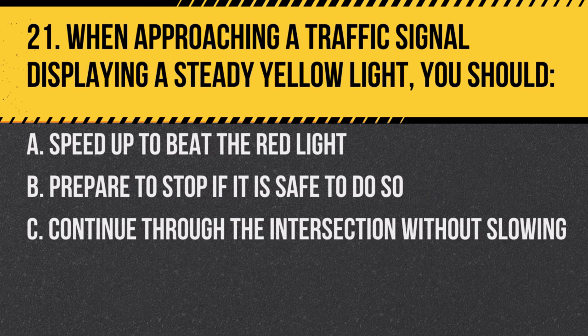Question 21. When approaching a traffic signal displaying a steady yellow light, you should: a. Speed up to beat the red light. b. Prepare to stop if it is safe to do so. c. Continue through the intersection without slowing. Answer: b. Prepare to stop if it is safe to do so. A steady yellow light indicates that the signal is about to turn red.